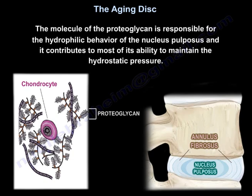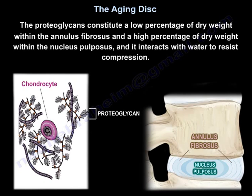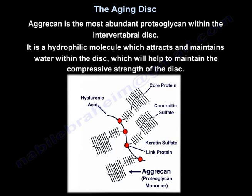The proteoglycan molecule is responsible for the hydrophilic behavior of the nucleus pulposus and contributes to its ability to maintain hydrostatic pressure. Proteoglycan constitutes a low percentage of dry weight within the annulus and a high percentage within the nucleus, where it interacts with water to resist compression. Aggrecan is the most abundant proteoglycan within the intervertebral disc — it is a hydrophilic molecule that attracts and maintains water within the disc, helping to maintain compressive strength.